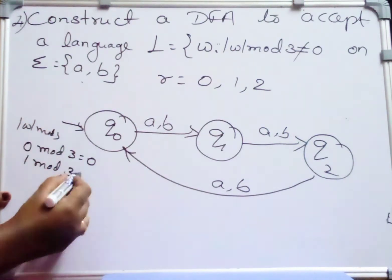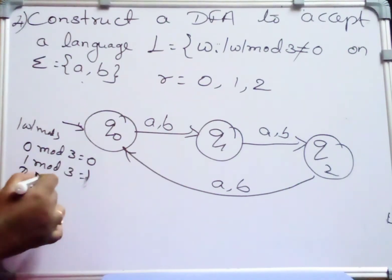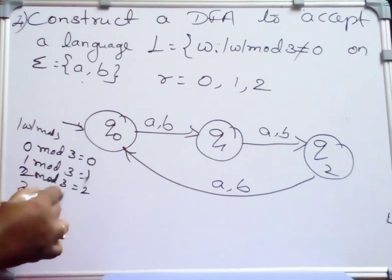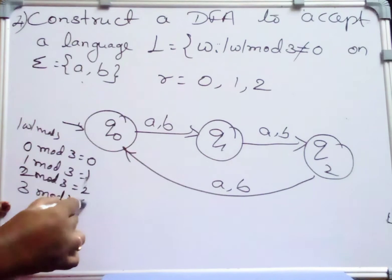1 mod 3 is equal to 1. 2 mod 3 is equal to 2. If it is 3 mod 3, 3 mod 3 is equal to 0.